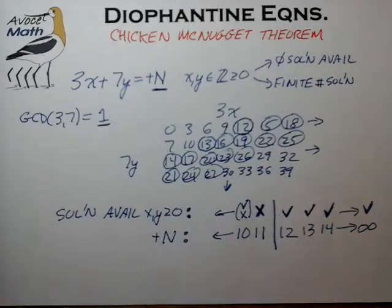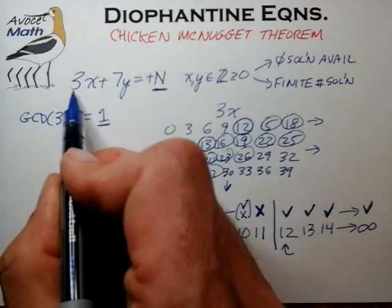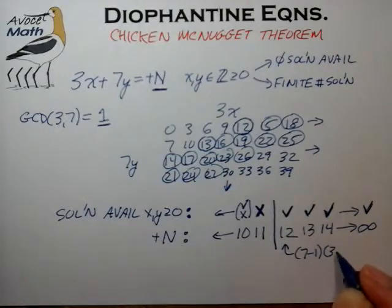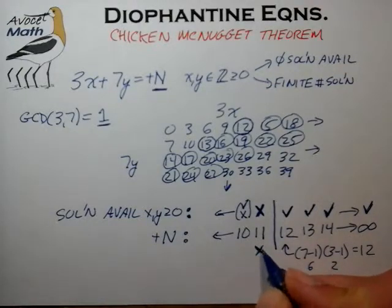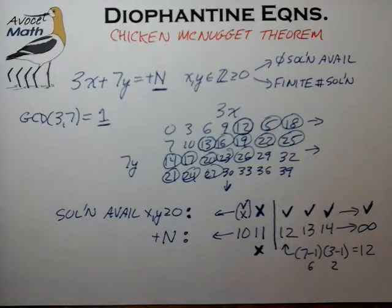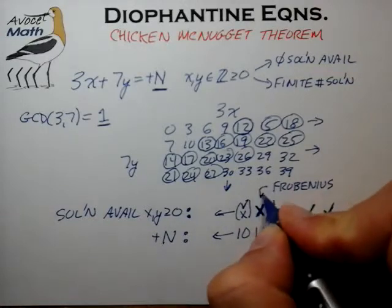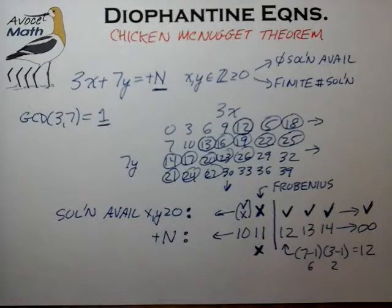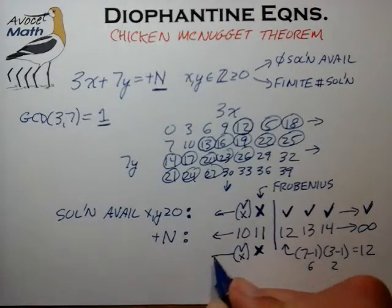It turns out that this line of demarcation can be described quite easily. The theory shows that this number 12 is given by a very simple formula: the coefficients 3 and 7, each reduced by 1 and multiplied together — that is, (3−1)(7−1) = 12. The number just below it, 11, is always a value for which no solution is available. This number is sometimes called the Frobenius number. For numbers below the Frobenius number, there's generally a pattern of available and non-available solutions that's difficult to describe in the general case.